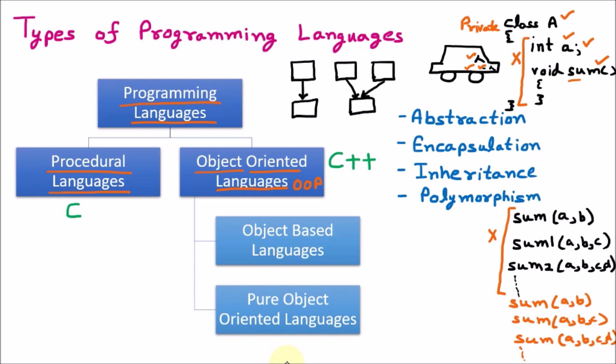So these four features — if a language has all of them — make it an object-oriented programming language, just like C++. To quickly revise: abstraction means data hiding; encapsulation means wrapping up data members and functions inside a class; inheritance means taking the parent's property, i.e., reusability; and polymorphism means one name in multiple forms. If all four features are present, it is an object-oriented programming language like C++.